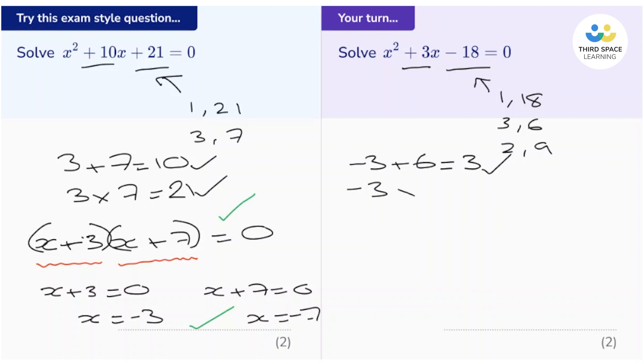Let's just double-check that that works when we multiply them. So negative 3 times 6 is negative 18, which is what we want.